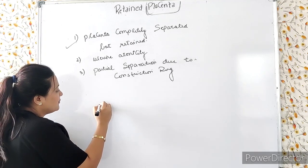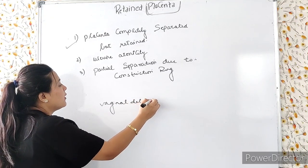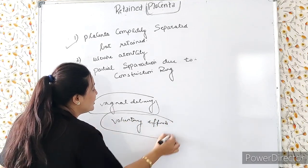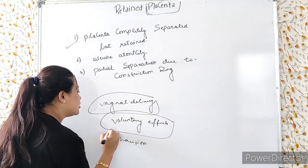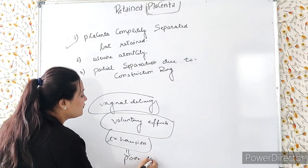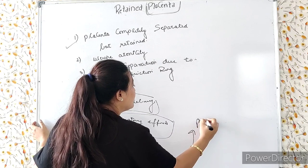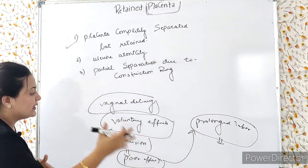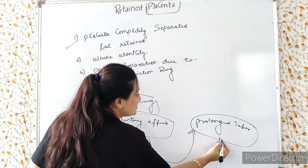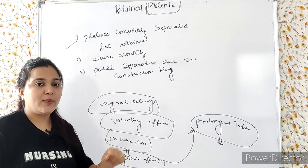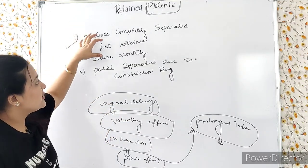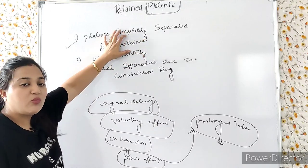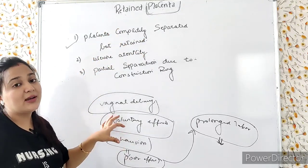In normal vaginal delivery, the woman was applying a lot of voluntary efforts during labor. After that, the woman experienced exhaustion. Due to exhaustion, the placenta — which separates within 30 minutes after birth — has separated but is still retained there due to poor voluntary efforts of the woman.